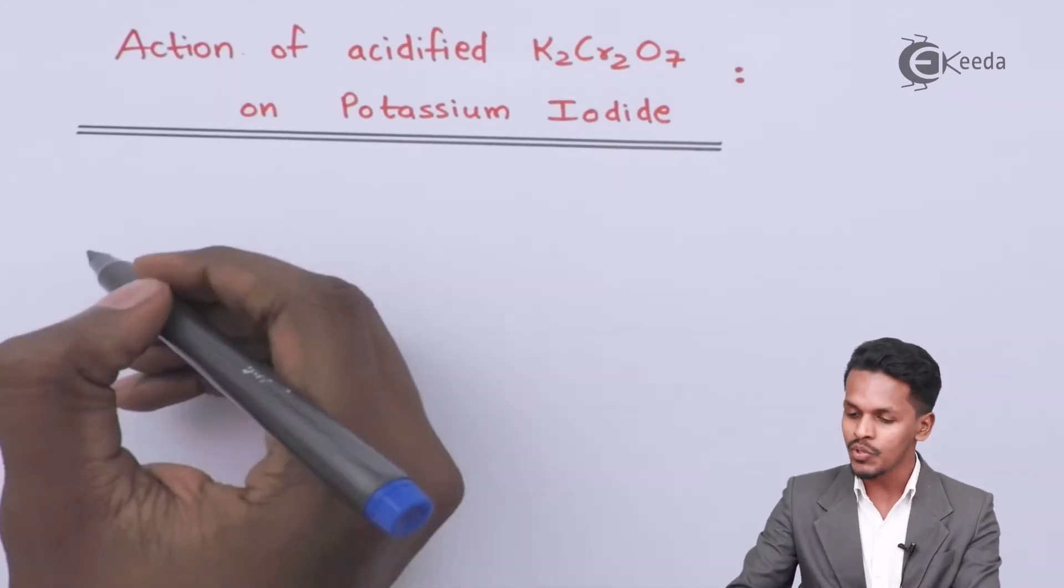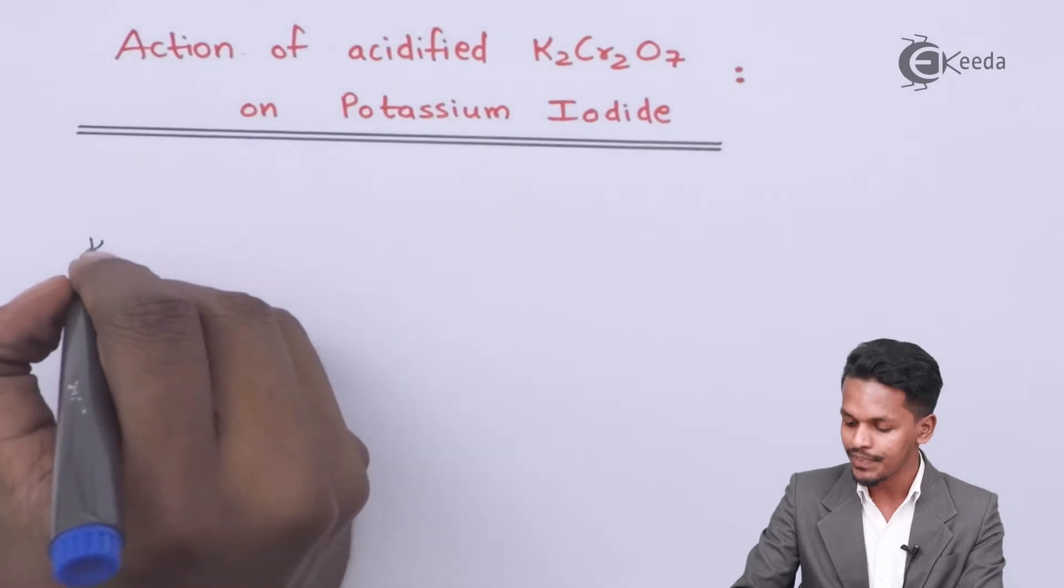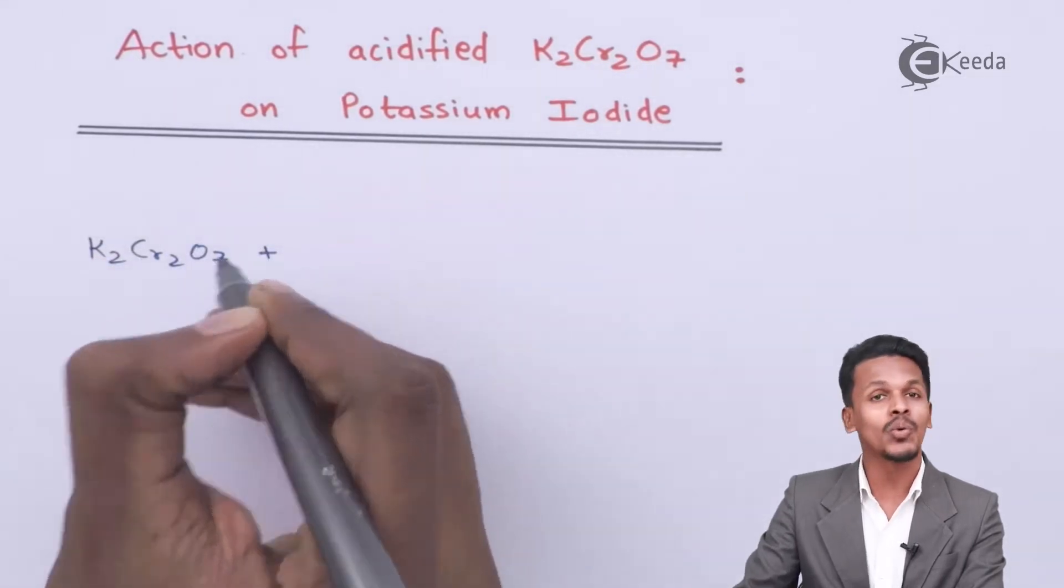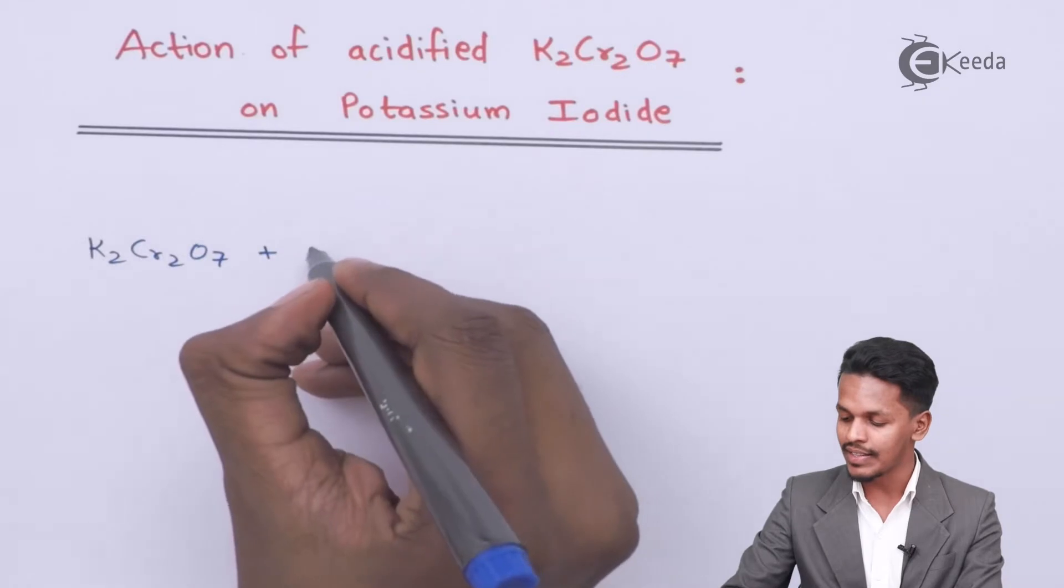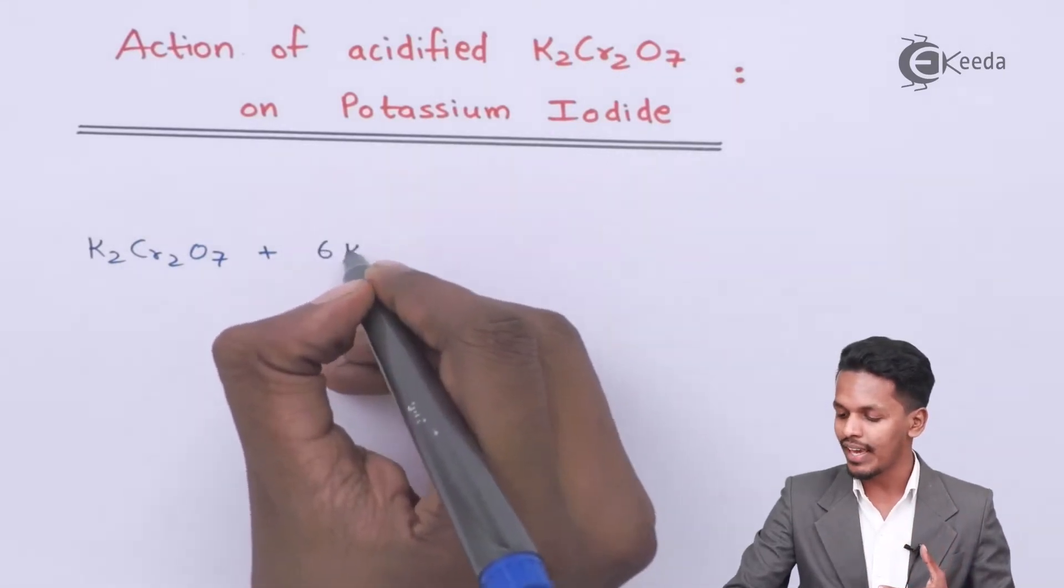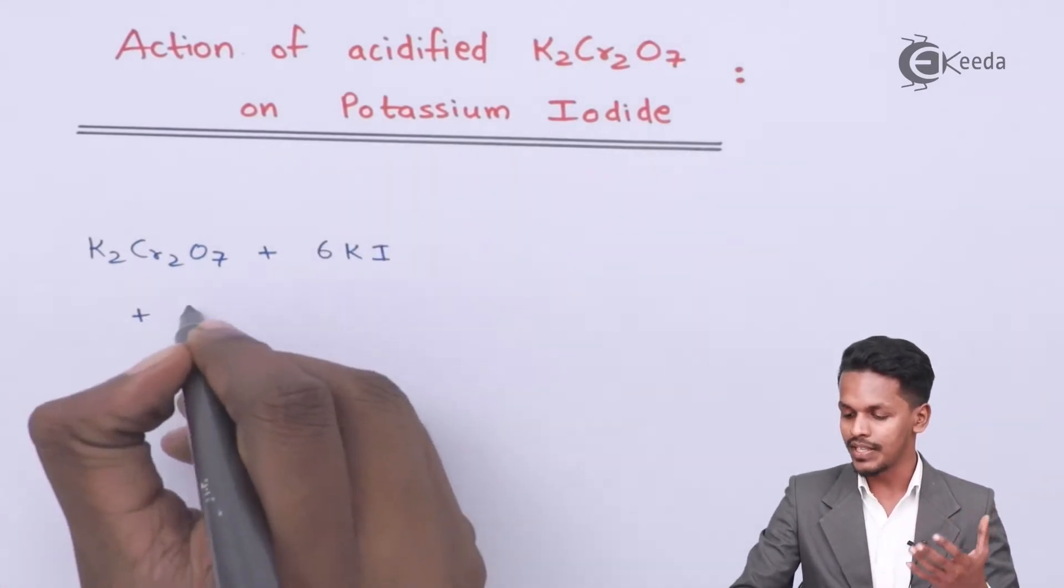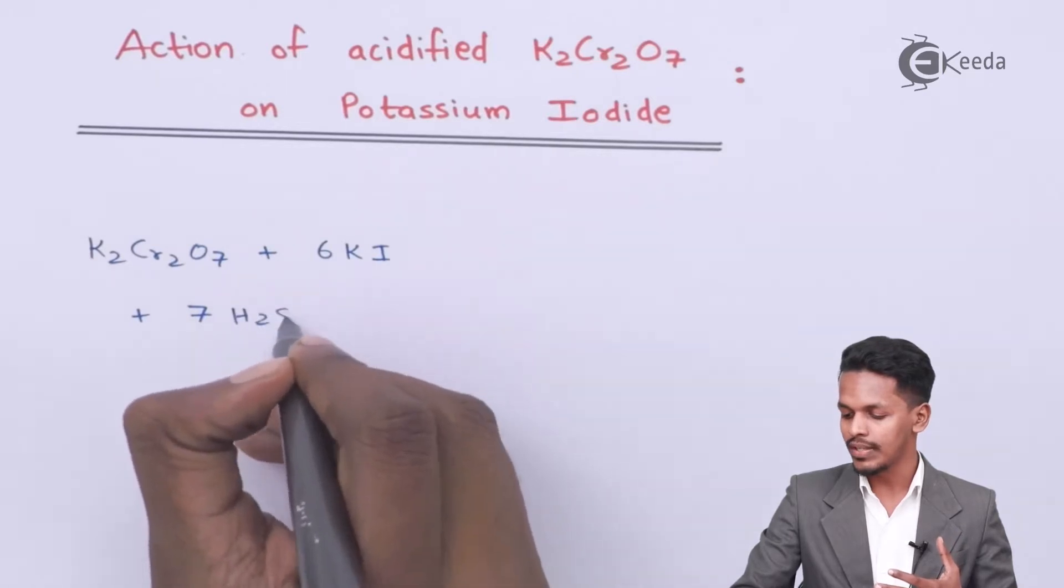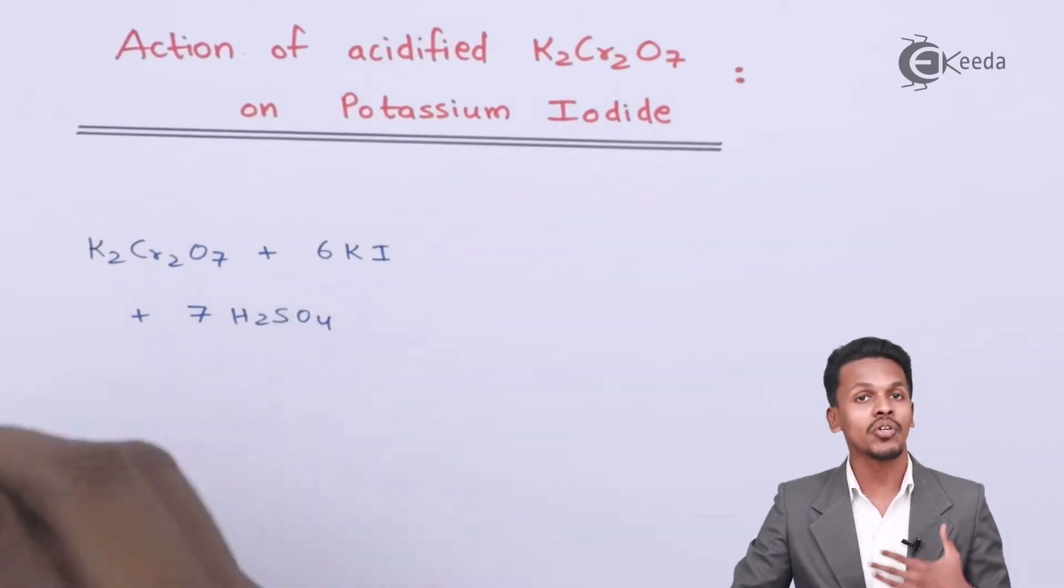So in that case, K2Cr2O7 in an acidified condition will react with 6 moles of KI along with H2SO4, which makes the solution more acidic.